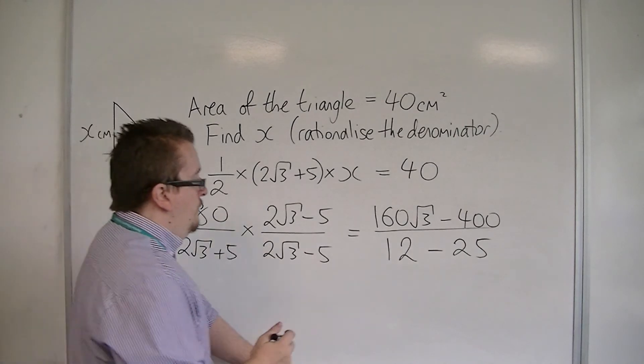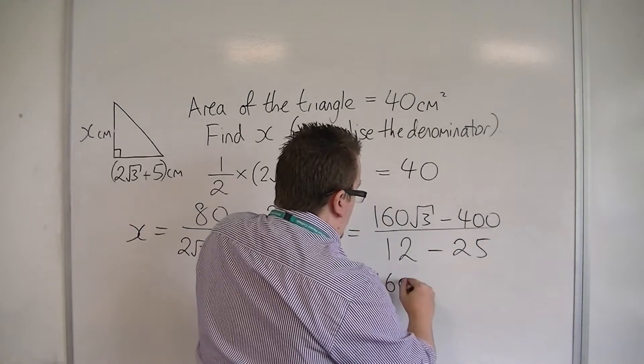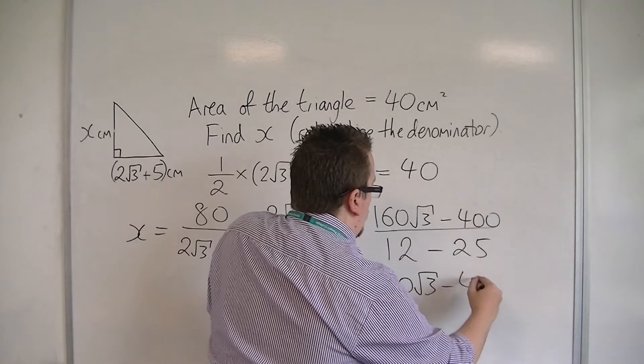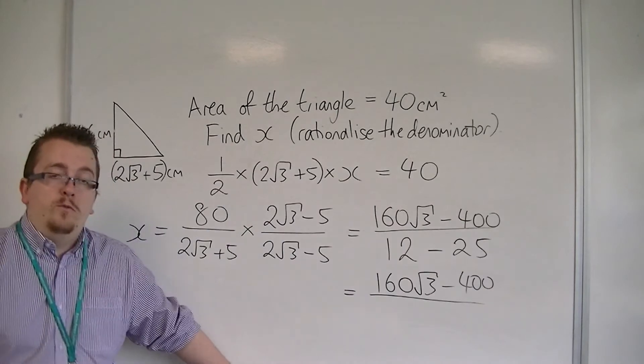What I have here is 160 root 3 take away 400 over 12 take away 25, which is minus 13.